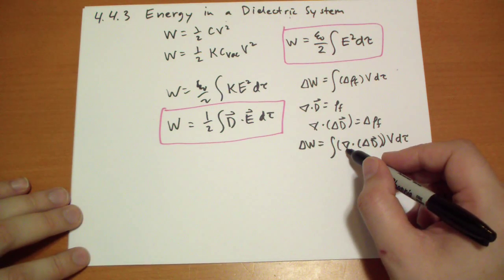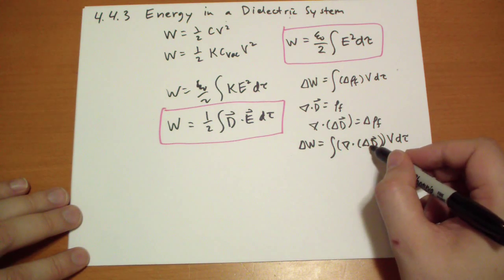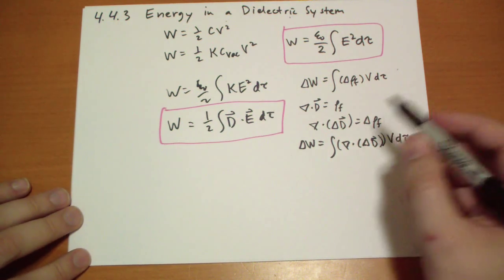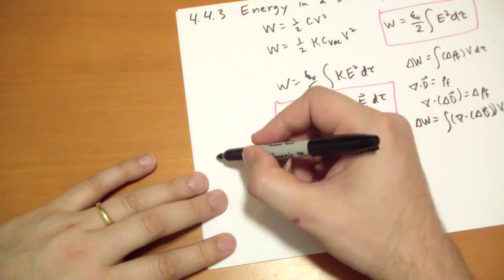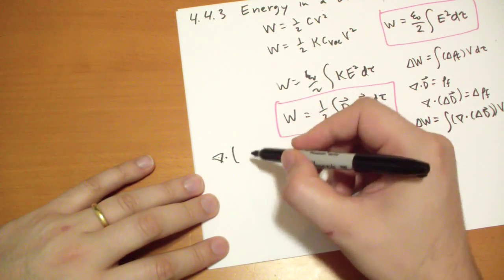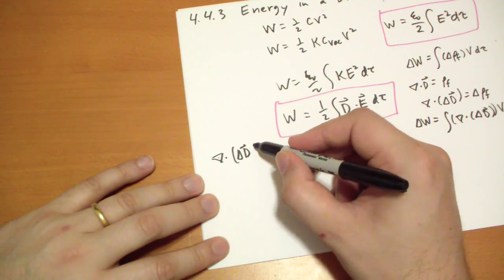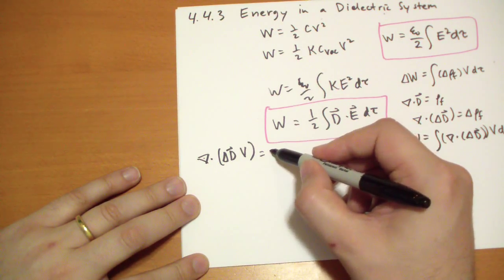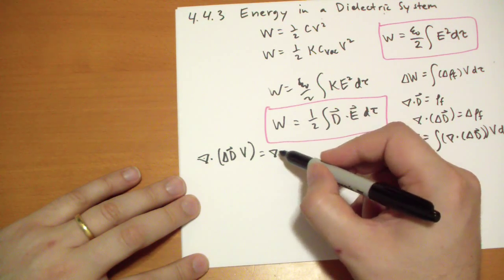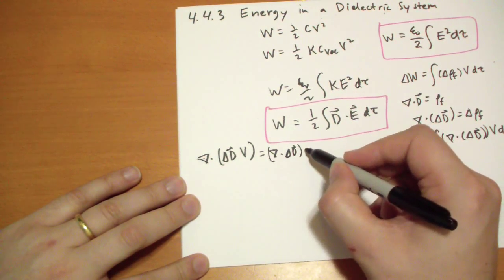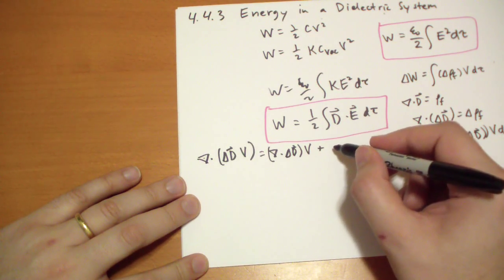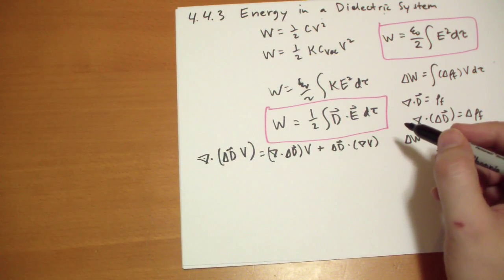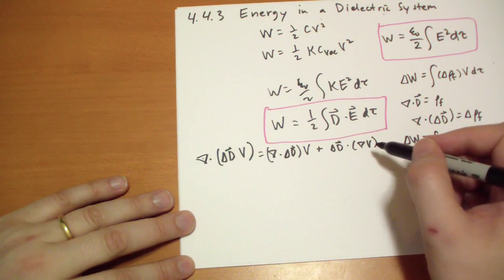This is confusing. This is the small change in, this is the nabla del operator thing. So now we plug that in here, so we get that is equal to the divergence of a small change in D, times the potential, and whatever area they exist at. So, this is across all space. So, product rule number 5, the divergence of a vector times a scalar is equal to...